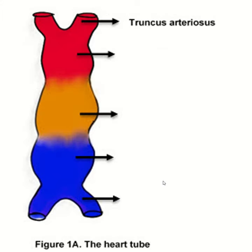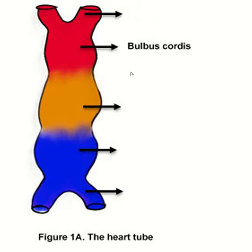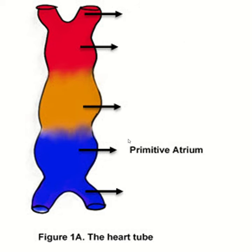Derivatives of the primitive heart tube. The parts of the heart tube are: truncus arteriosus, bulbus cordis, primitive ventricle, primitive atria, and sinus venosus.